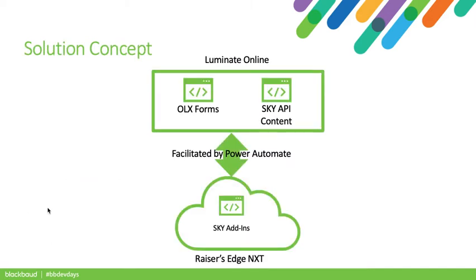The overall concept is rather straightforward. You can augment the features of Luminate Online with both Online Express Forms and Sky API-powered content in such a way as to provide a consistent experience for those interacting with Luminate Online, whether via native functionality or those augmented options. Furthermore, using Sky add-ins in Razor's Edge NXT can help bring visibility to more data from Luminate Online into dedicated tiles that are easy to review and digest. Though you can use direct Sky API calls to accomplish this, using Power Automate to facilitate makes it easier to set up and manage, and potentially easier for more organizations to take advantage of.